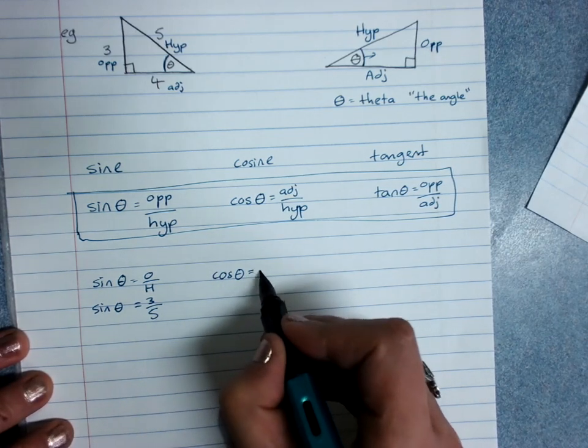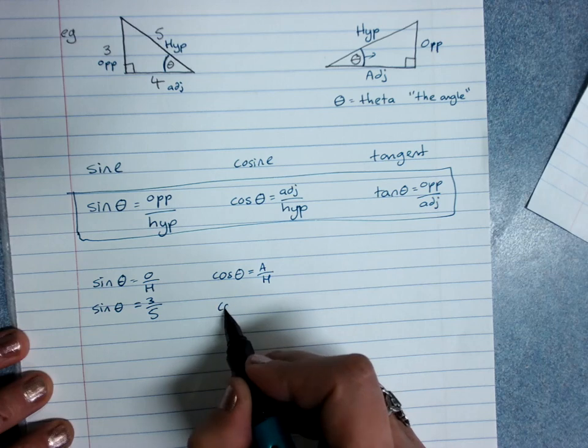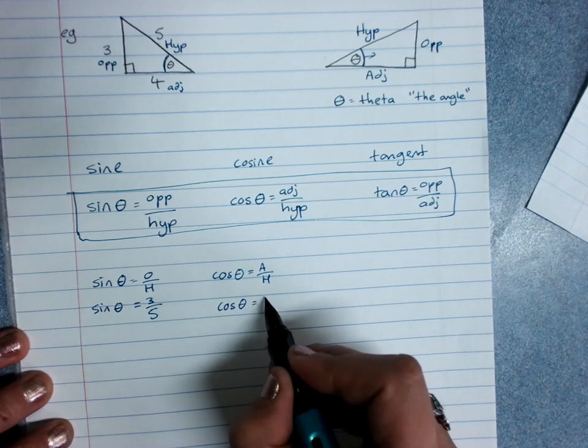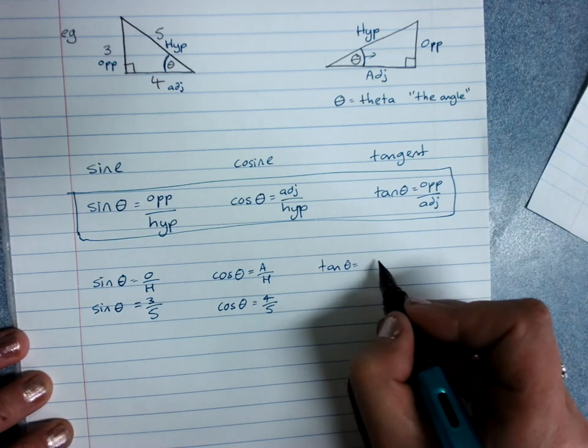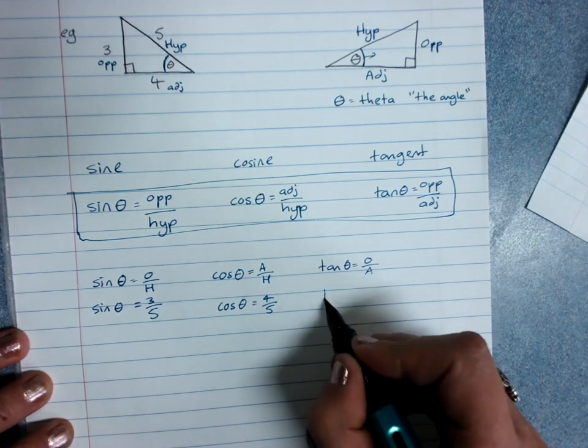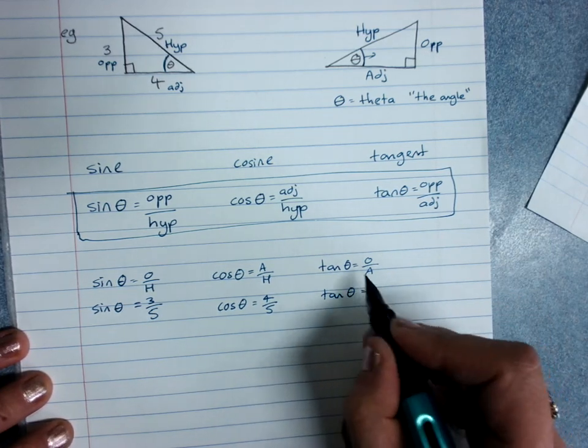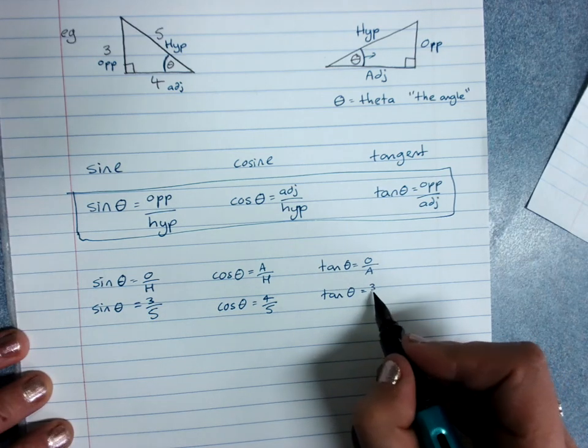Cos of the angle is adjacent over hypotenuse, so cos of the angle here is 4 over 5. Tan of the angle is opposite over adjacent, so tan here is 3 over 4.